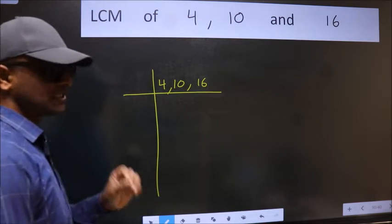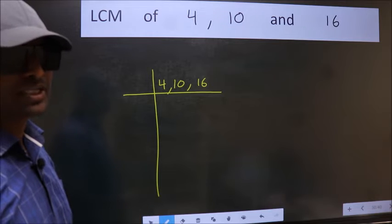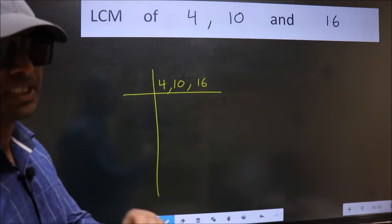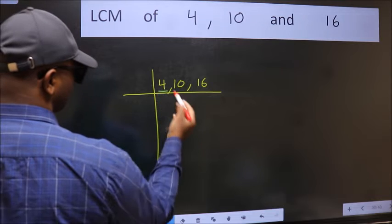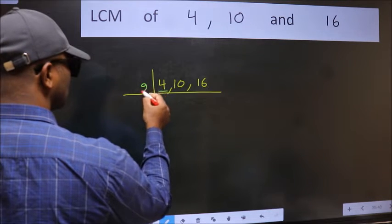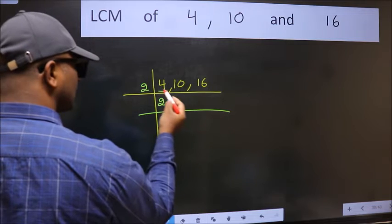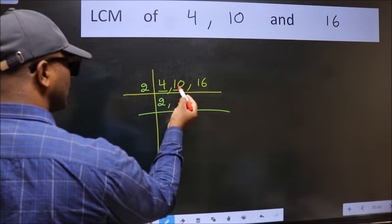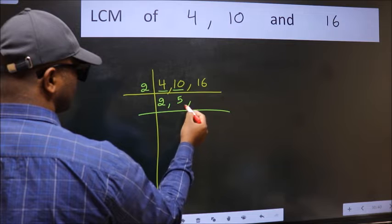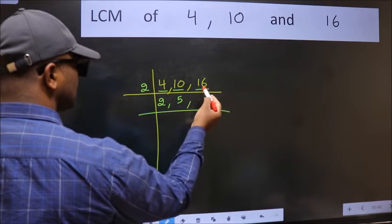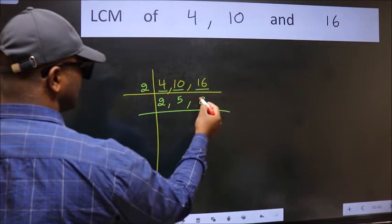This is your step 1. Now we should focus on the first number, which is 4. 4 times 2 is 4. The other number 10 — when do we get 10 in the 2 table? 2 times 5 is 10. The other number 16 — when do we get 16 in the 2 table? 2 times 8 is 16.